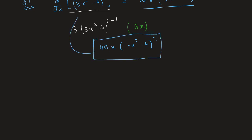Now, since differentiation of (3x² - 4)⁸ gives us 48x(3x² - 4)⁷, the integration of 48x(3x² - 4)⁷ dx should give us back (3x² - 4)⁸. Let's verify how we do that.